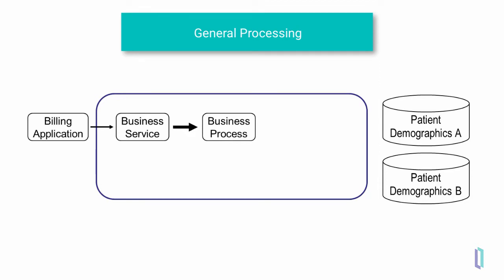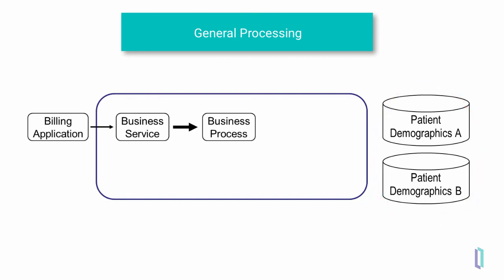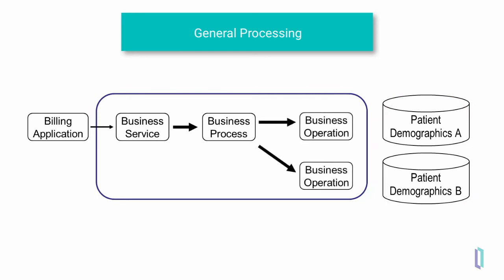The business process will control the obtaining and combining of data necessary for the response. Since the data for the response is contained in two different databases, the business process will send two separate requests to two separate business operations.